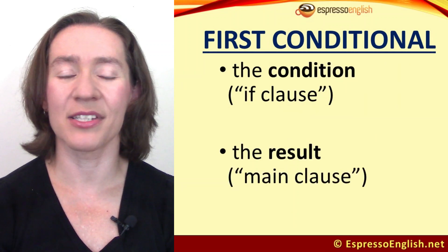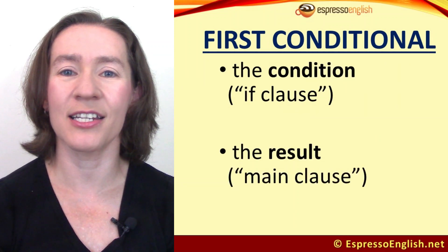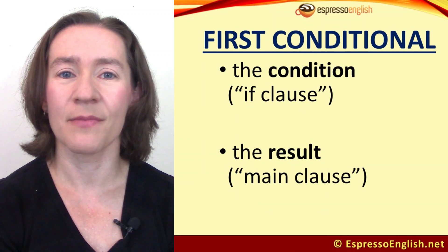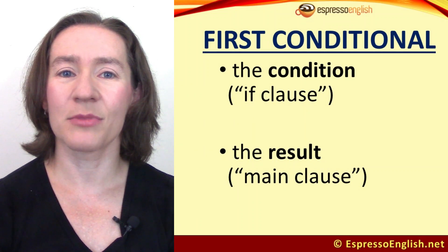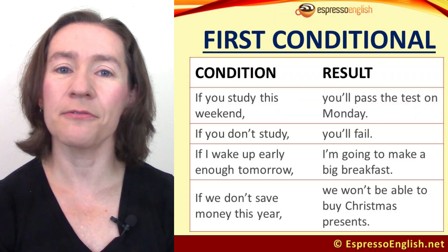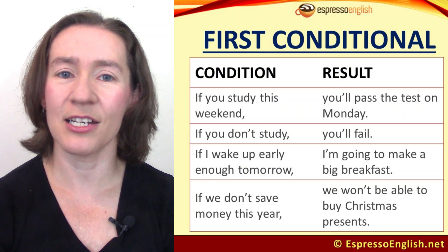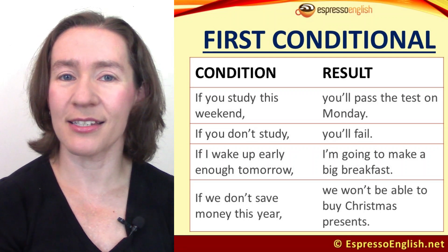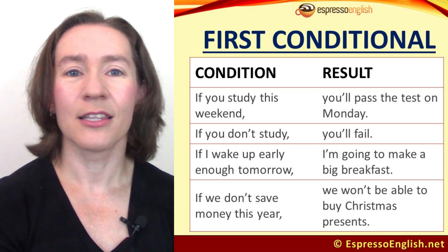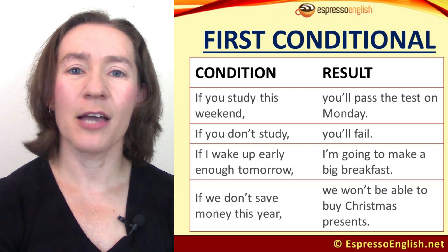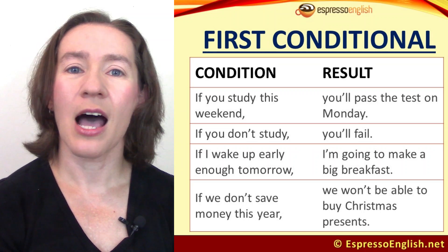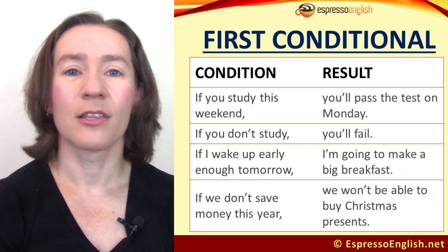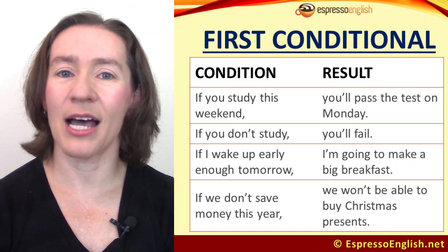You can see from those examples that there are two parts to a first conditional sentence. There's the condition — sometimes called the IF clause — and then the result, sometimes called the main clause. So: if you study this weekend (that's the condition), you'll pass the test on Monday (that's the result). If you don't study (condition), you'll fail (result). If I wake up early enough tomorrow, I'm going to make a big breakfast. If we don't save money this year, we won't be able to buy Christmas presents.